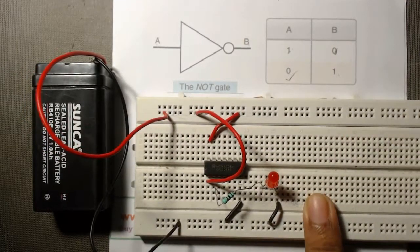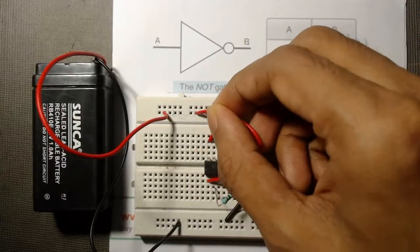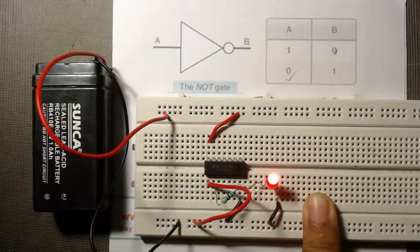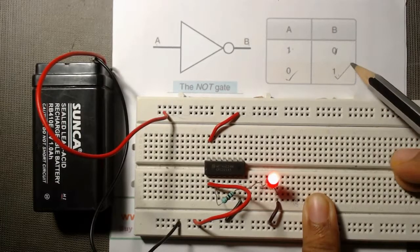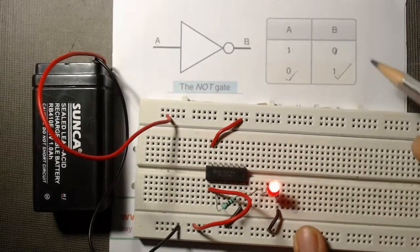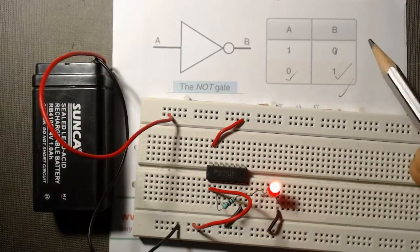When we apply 0, 0 means we have to connect this terminal A to ground row. Ground means 0. So we can see in this case the output should be 1. That is why the LED is now in ON state. So we have verified the truth table.